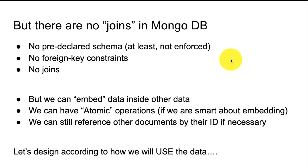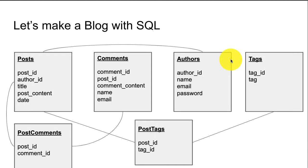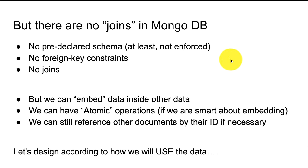There are no foreign key constraints. In the previous SQL example, you might have authors as a foreign key constraint on posts — you can't have an invalid author ID. There are mostly no joins, but the power of MongoDB is that we can embed data inside other data. So you can put your relevant data all together. Even though you can't have atomic operations across different documents or collections like you can in MySQL, you can still be smart and embed the data you need inside other data.